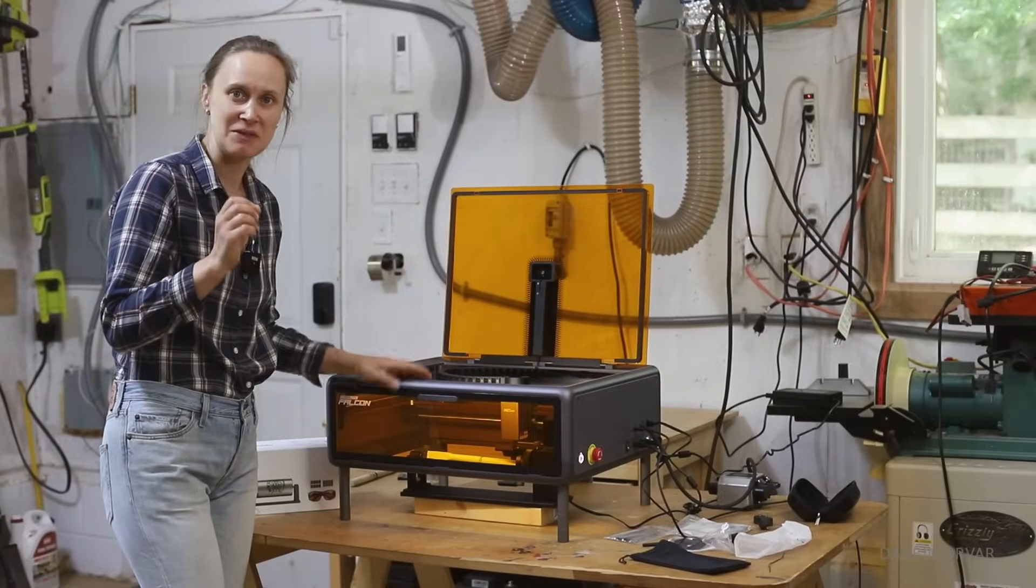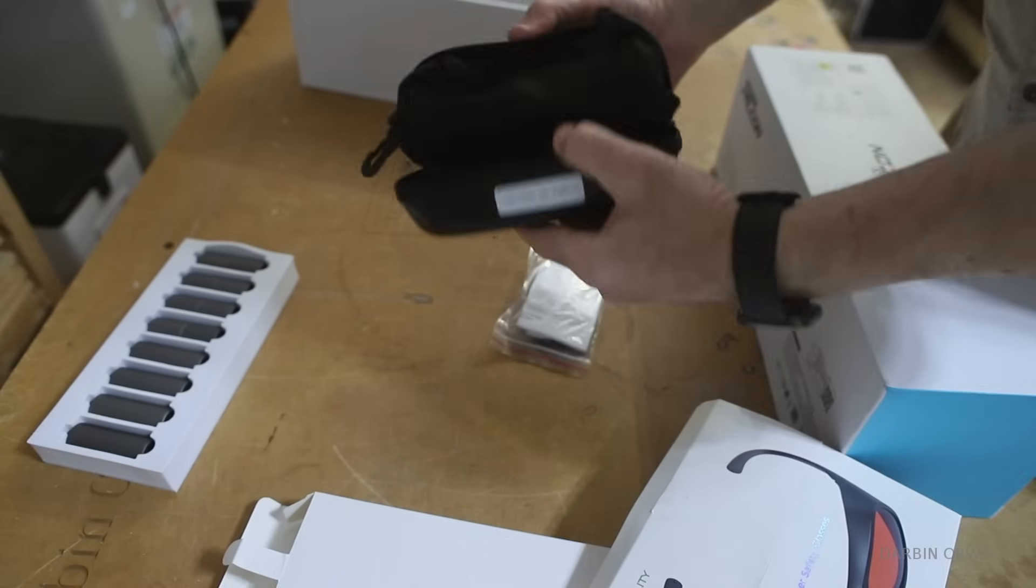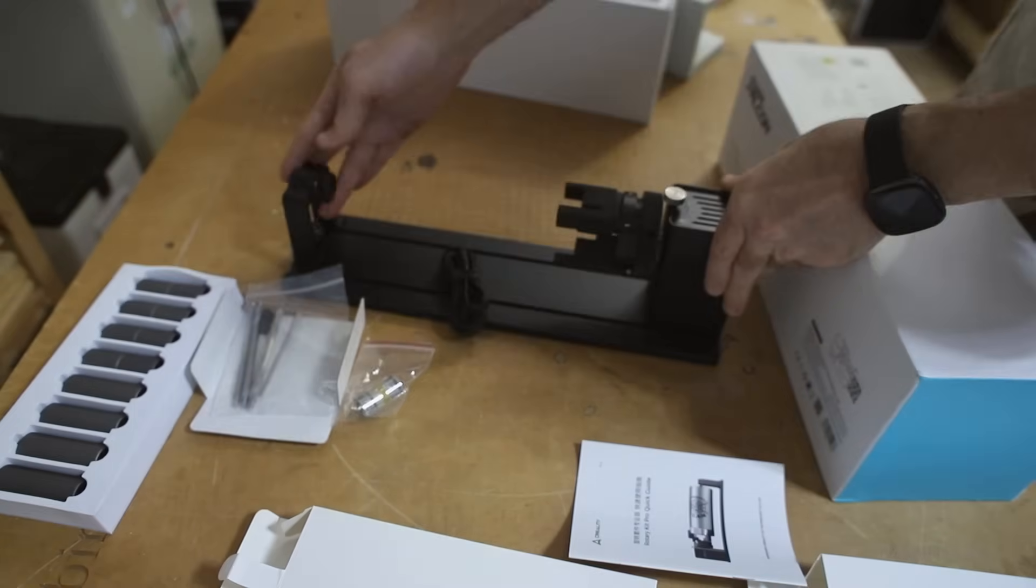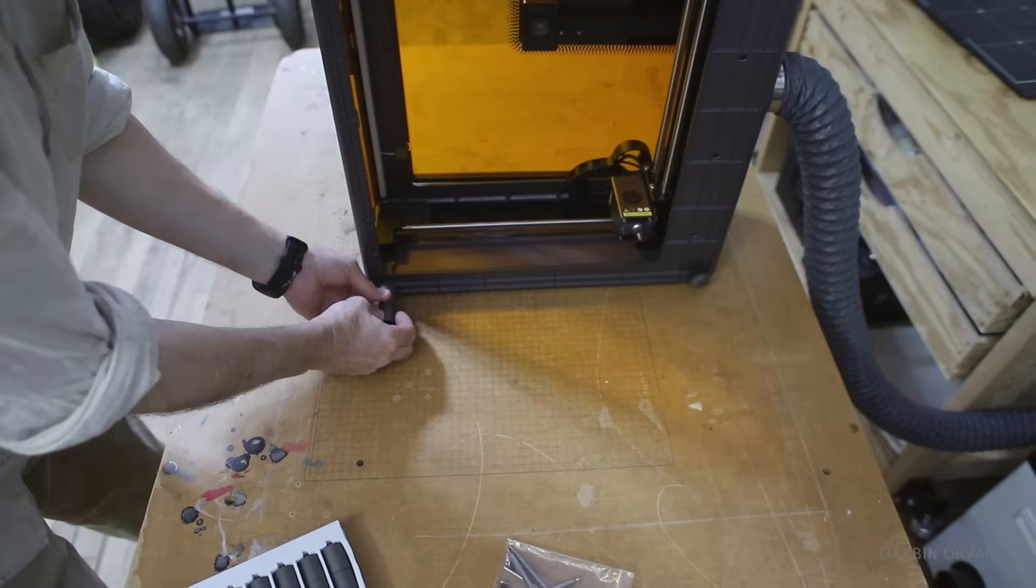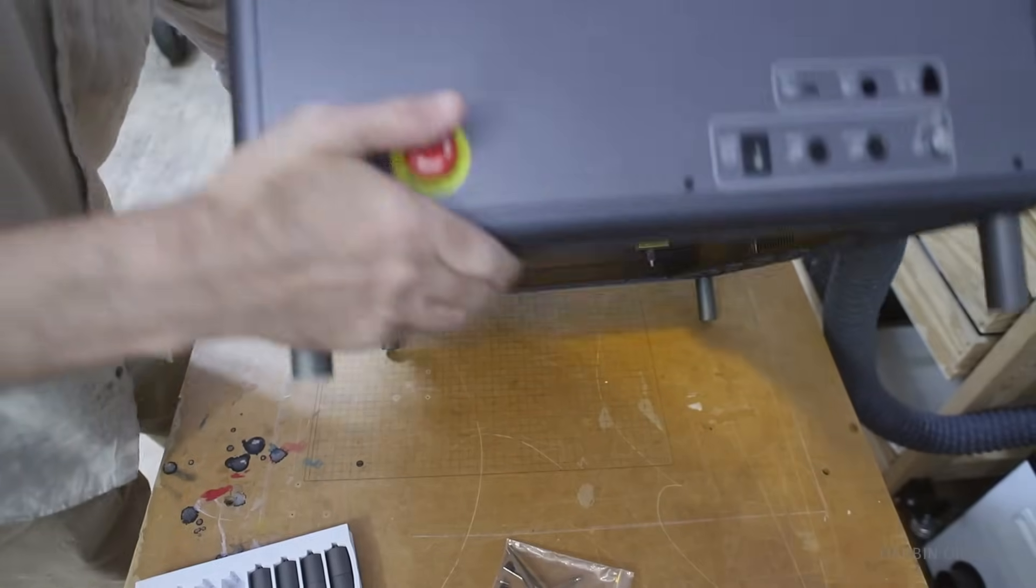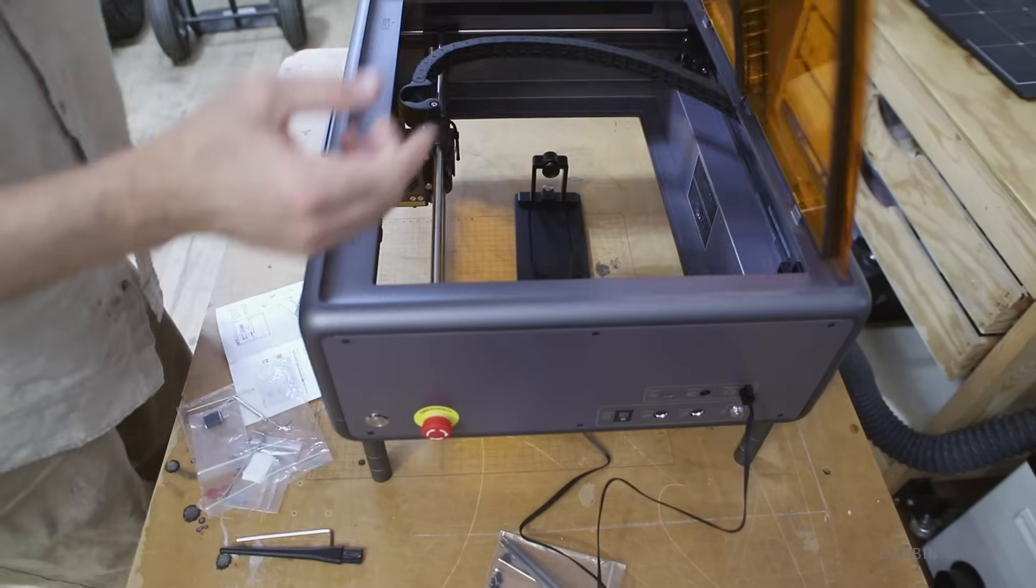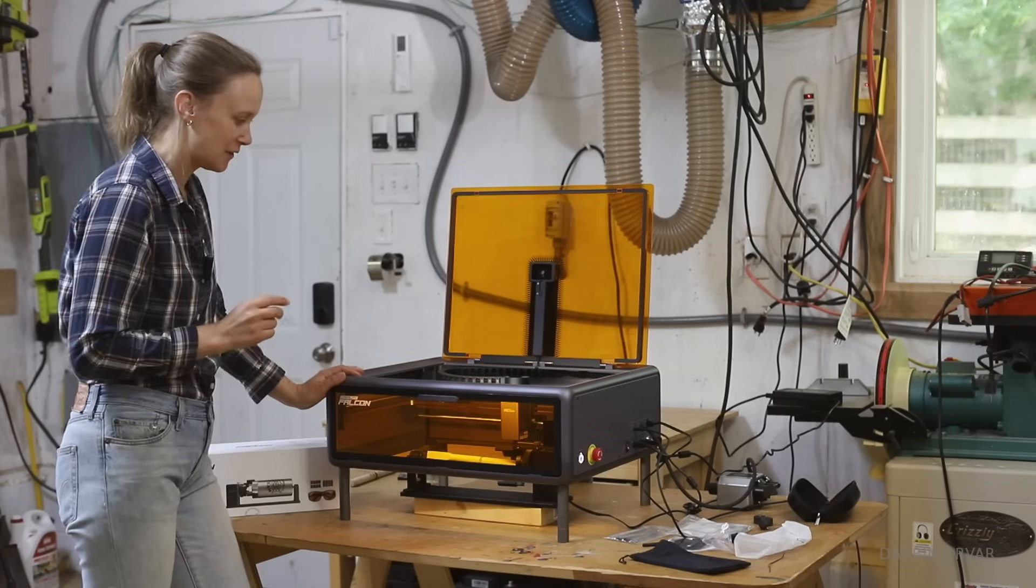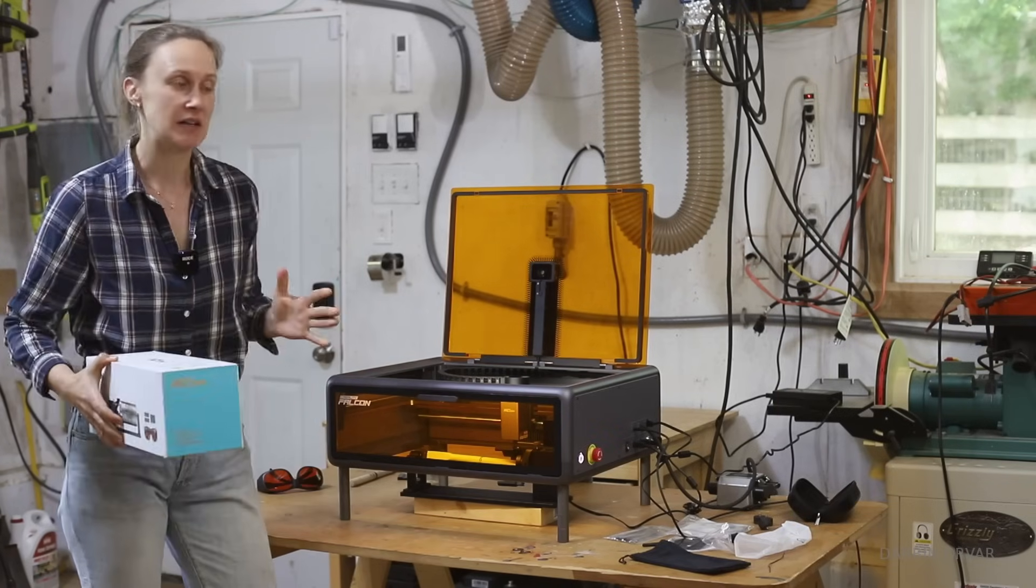Engraving flat things is fine, but sometimes you want to engrave round things. For that, now we have the rotary attachment. This works pretty much straight out of the box.